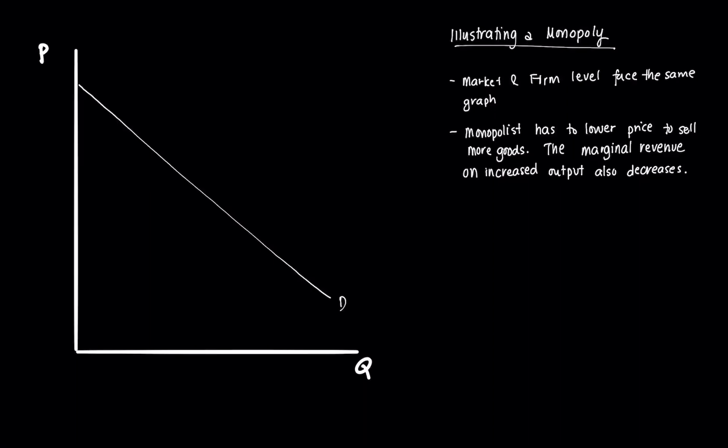But in the case of a monopolist, the market and the firm level graphs are essentially the same graph because we only have one producer and that's the monopolist. We're just going to be using this one graph here and we have a demand curve, and as you can see, there's still that negative relationship between price and quantity demanded.